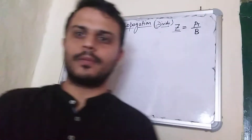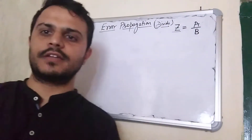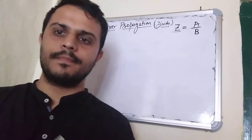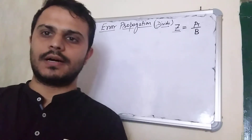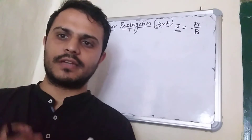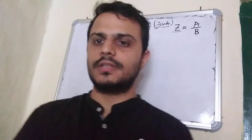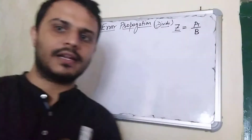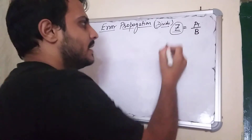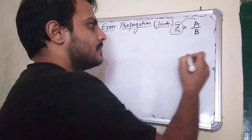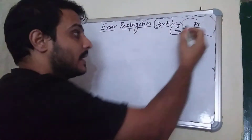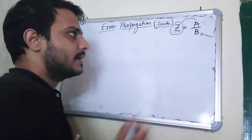Hello students, today I'm introducing a new topic: propagation of error in division, meaning when your result involves a quotient. In previous videos I already discussed propagation of error in sum, propagation of error in difference, and propagation of error in product. Today I will explain propagation of error when your result involves a quotient, meaning you are going to find out the result for Z by dividing measurement A by measurement B.